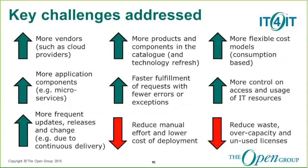Here are some of the key challenges that the IT organization is facing related to this specific value stream. As we end up with more vendors delivering more services, more products in our catalogs with more frequent changes and releases to process — for example, due to continuous delivery — we need to deliver faster with fewer errors, provide more flexibility in cost models, but also improve control on consumption and reduce overcapacity. The IT function will need to transform itself to become a broker of services and orchestrate fulfillment across internal and external service providers.